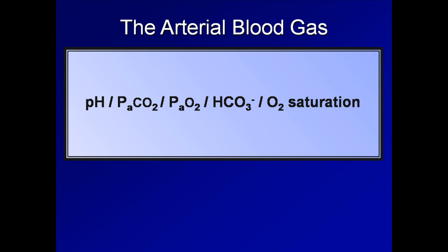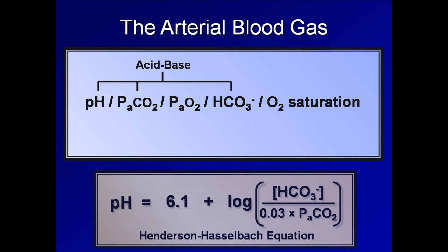What do we do with these values? The pH, PaCO2, and bicarb are used in determining the acid-base status of the patient, that is, whether the pH of arterial blood is normal, too acidemic, or too alkalemic. These values are related via the Henderson-Hasselbalch equation, which will be discussed in Lecture 2.